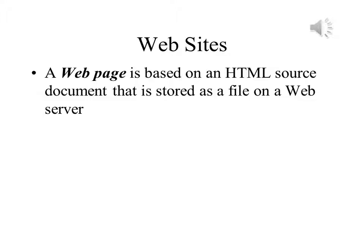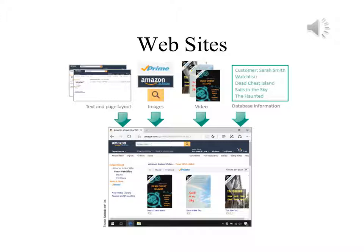A web page's contents are displayed based on the HTML embedded in it and on the cascading style sheets that it either contains or references. As shown in this slide, there are many elements to a web page. The page in question comes from Amazon's website. It contains text and layout information in its HTML code, as well as images, possibly videos, and database information. This is a lot more complex than the pages that Berners-Lee originally conceived.